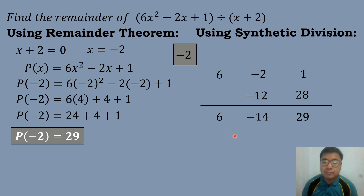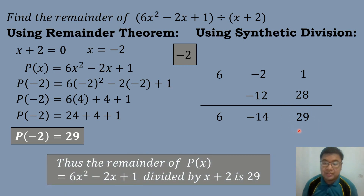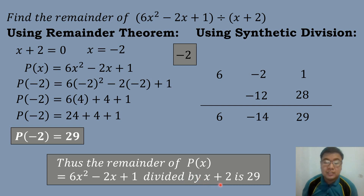So the value of the remainder is the last term of our quotient, which is 29. Thus, the remainder of P of X equals 6X squared minus 2X plus 1 divided by X plus 2 is equal to 29.